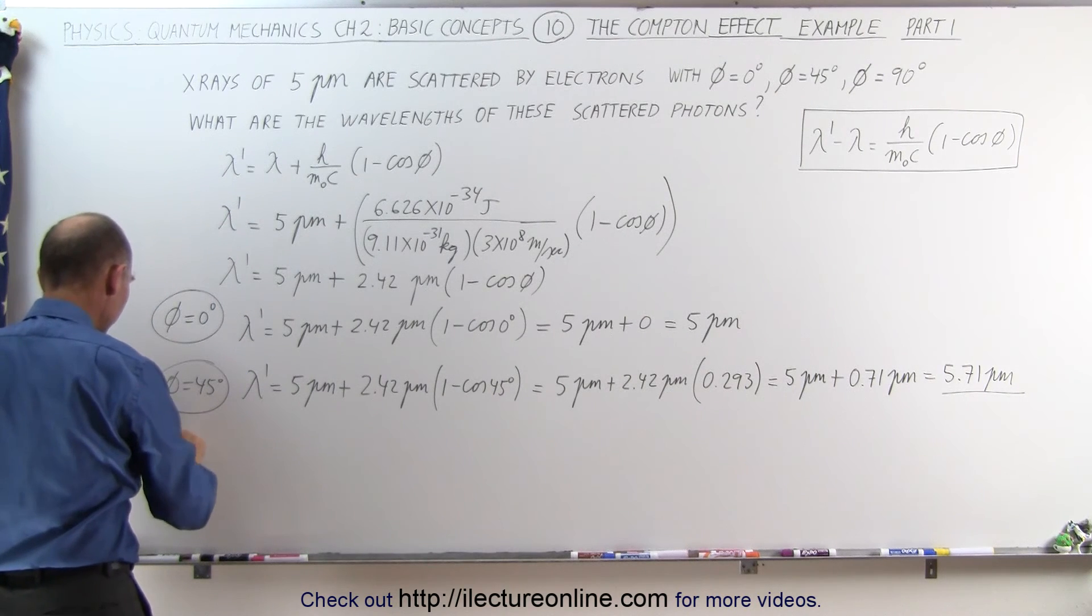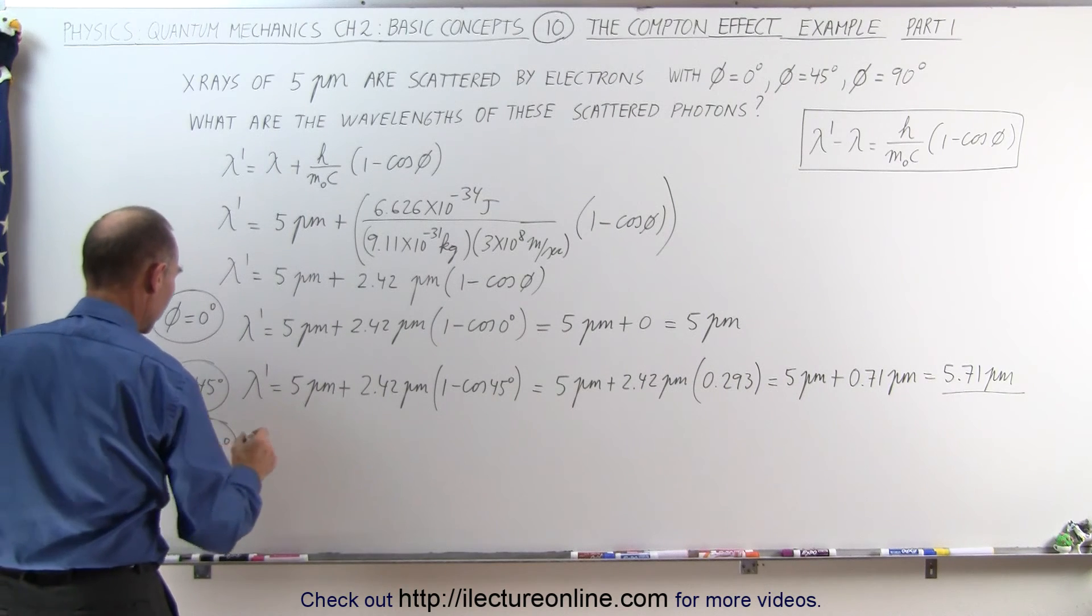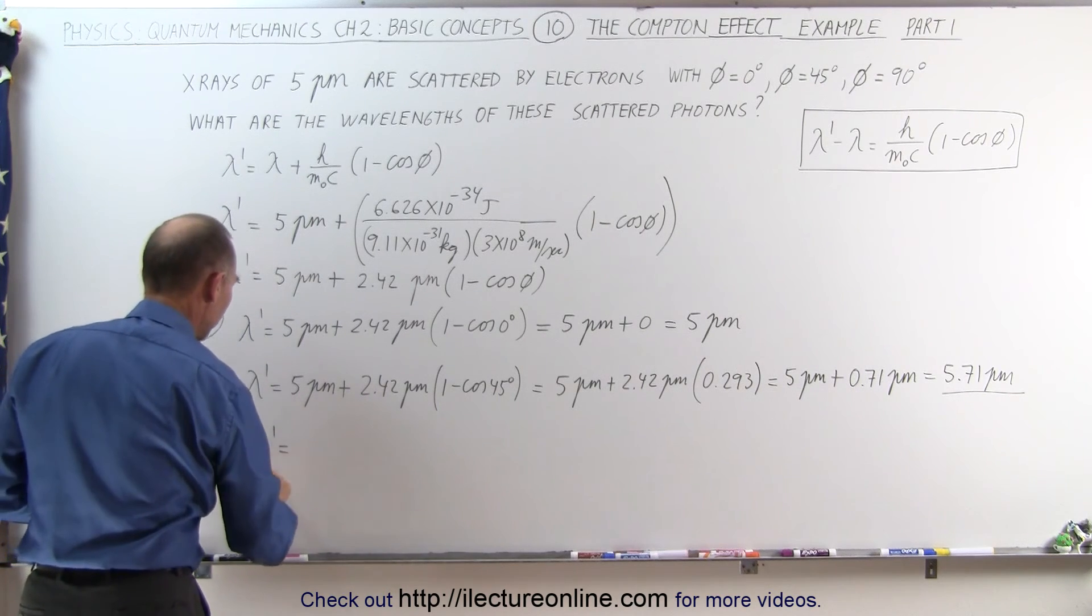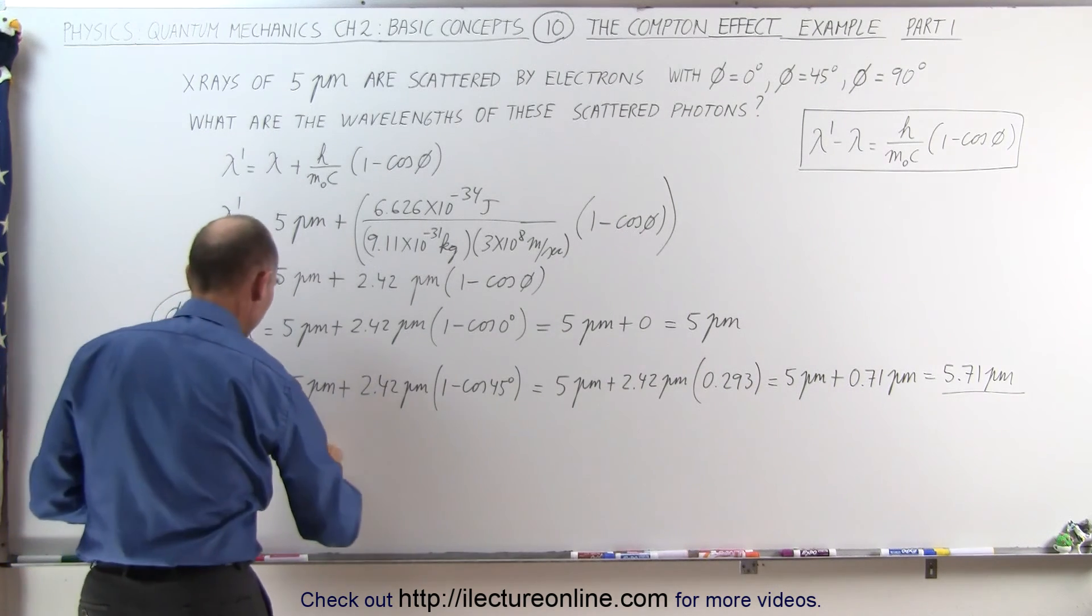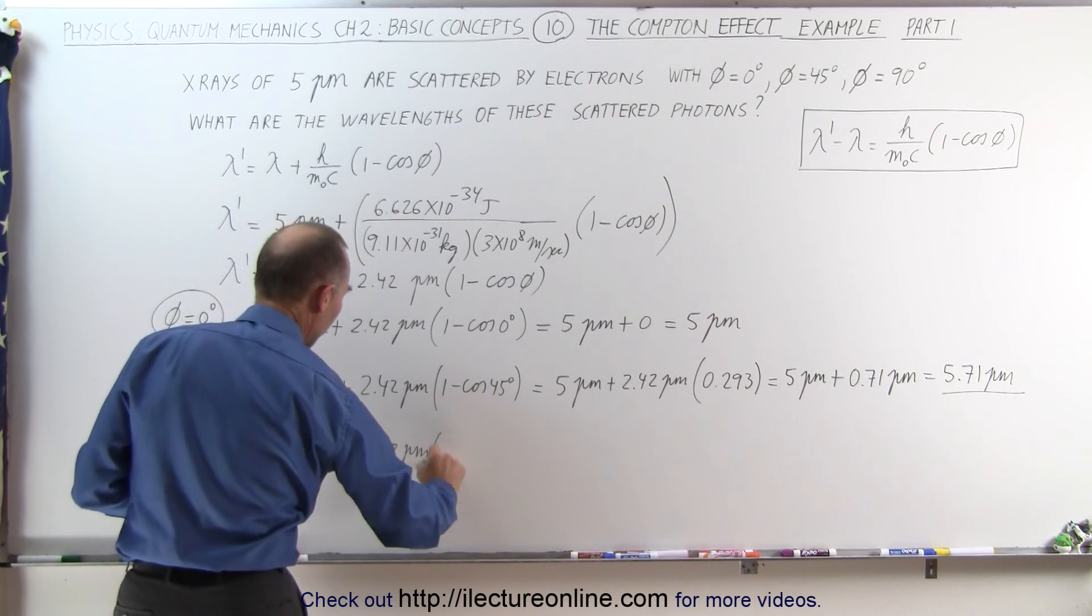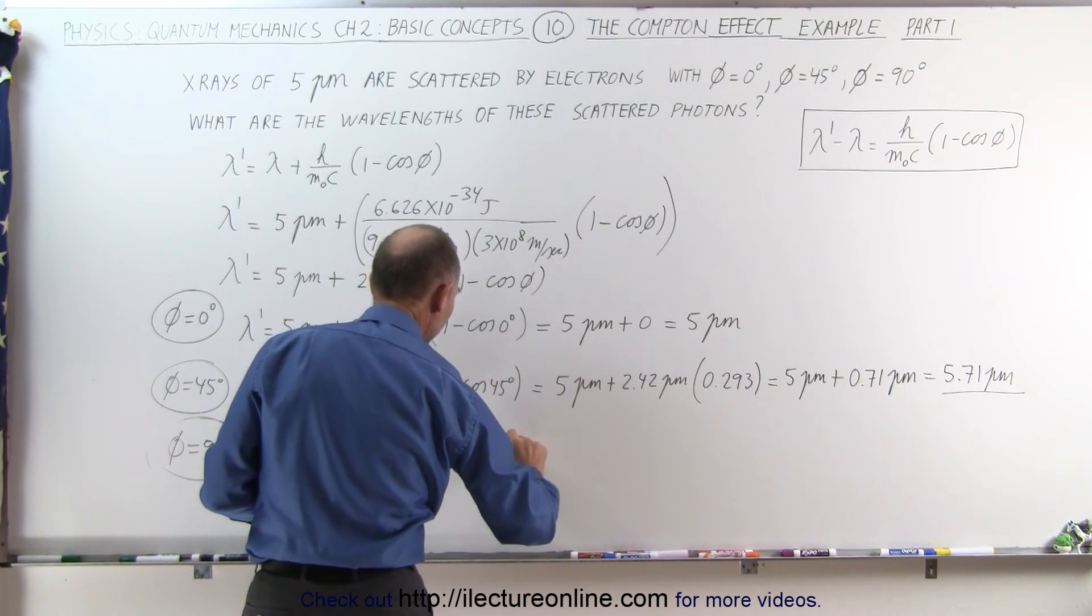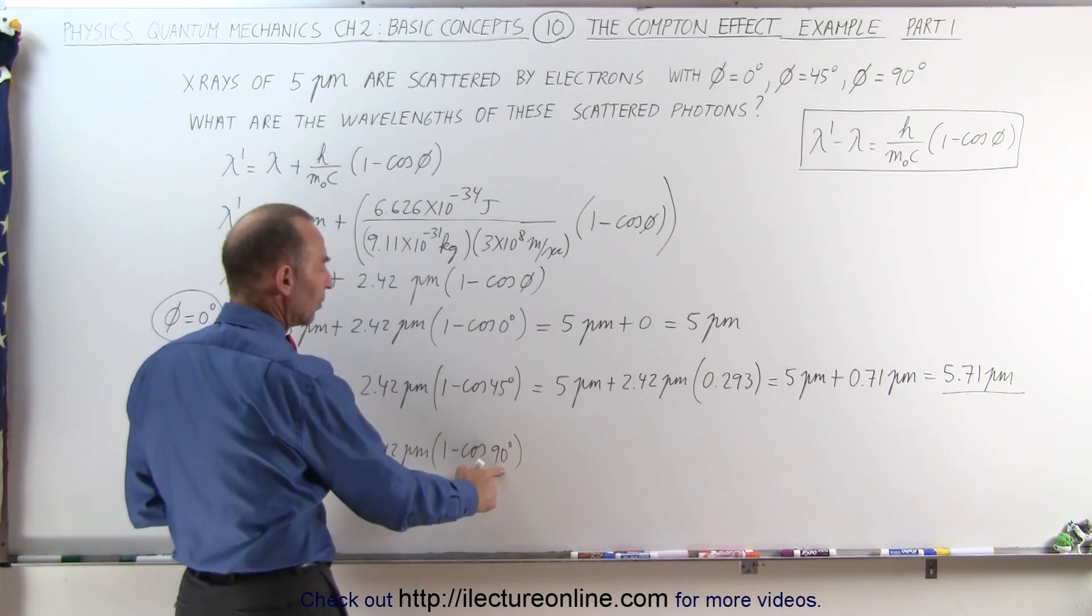And then finally for a scattering angle of 90 degrees we get lambda prime, the wavelength of the scattered photons, 5 picometers plus 2.42 picometers times 1 minus the cosine of 90 degrees. Of course the cosine of 90 degrees is equal to 0.